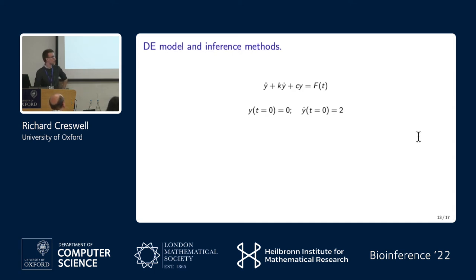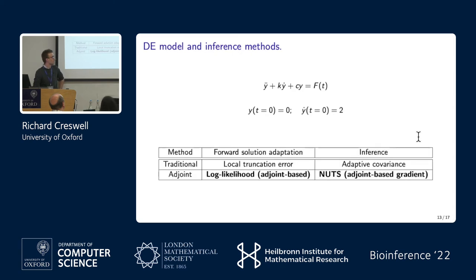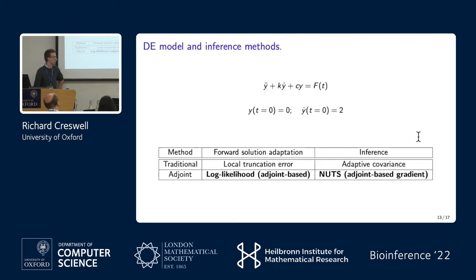I'll initialize it at zero with a kick on the first derivative as initial condition. I'm running inference using two strategies. As a comparative method called 'traditional,' we use standard solvers controlling local truncation error with adaptive covariance MCMC, which doesn't require gradient information. We compare that to the 'adjoint' method I've proposed, which controls error in the log likelihood and uses the No-U-Turn Sampler for inference.